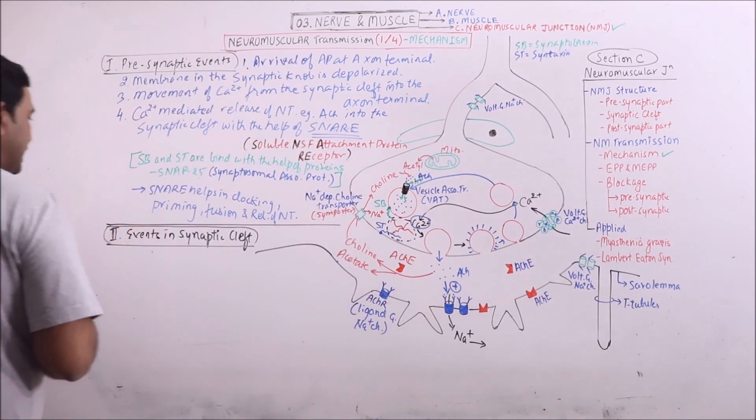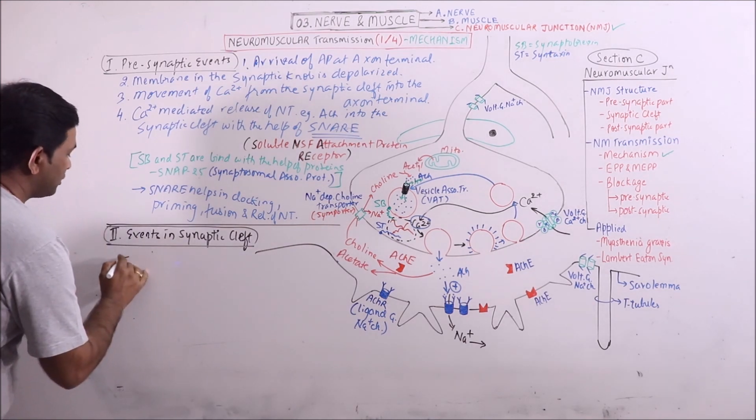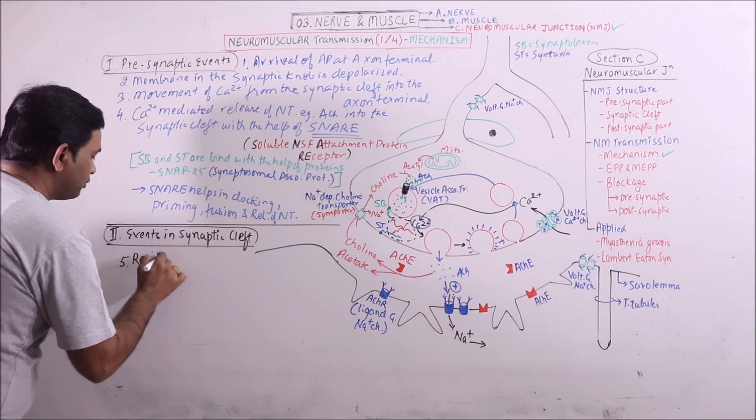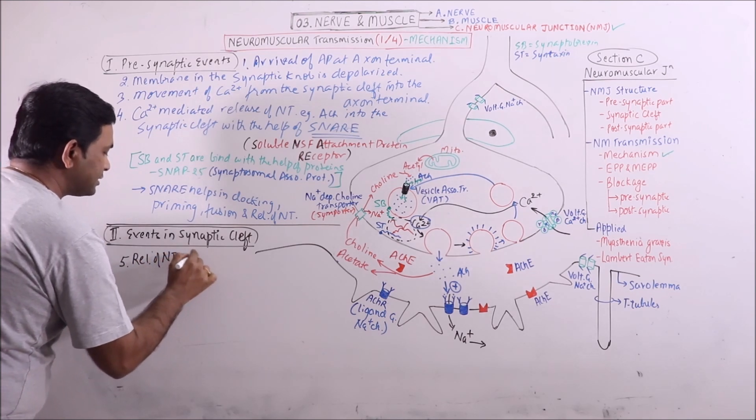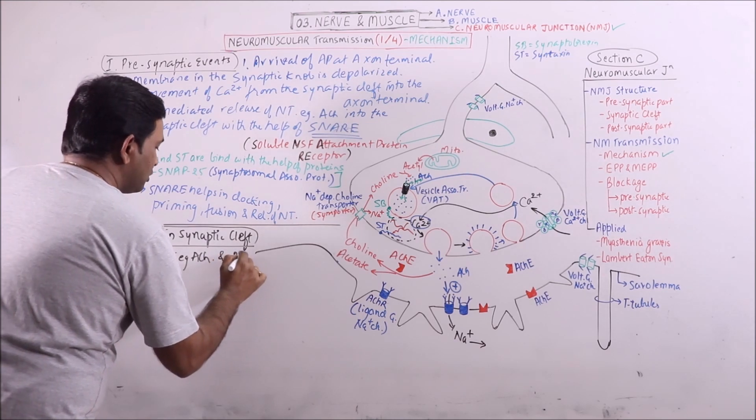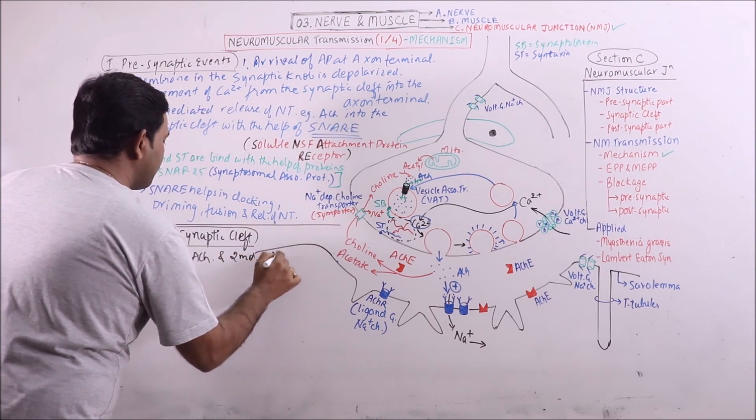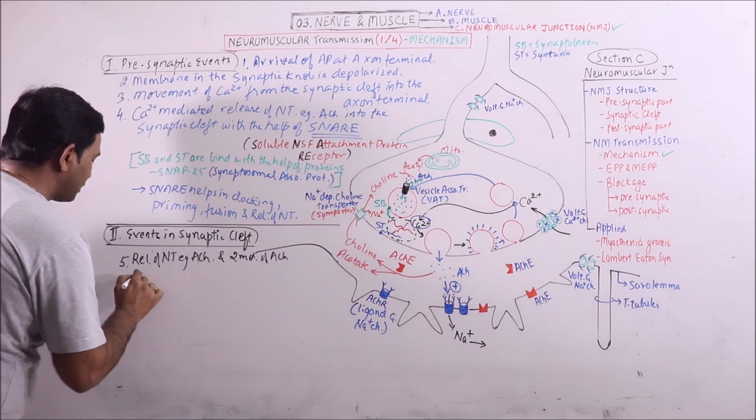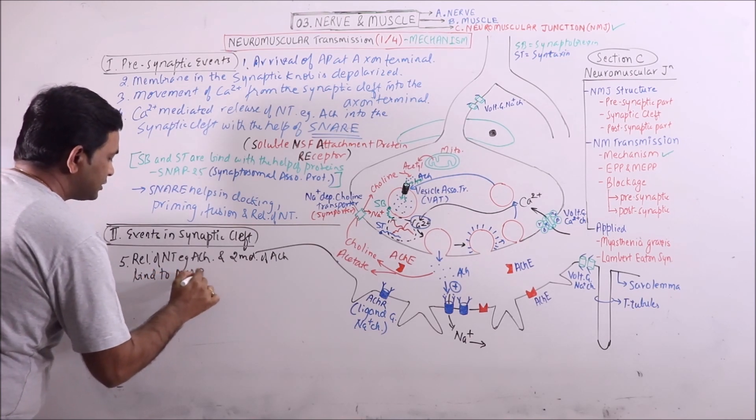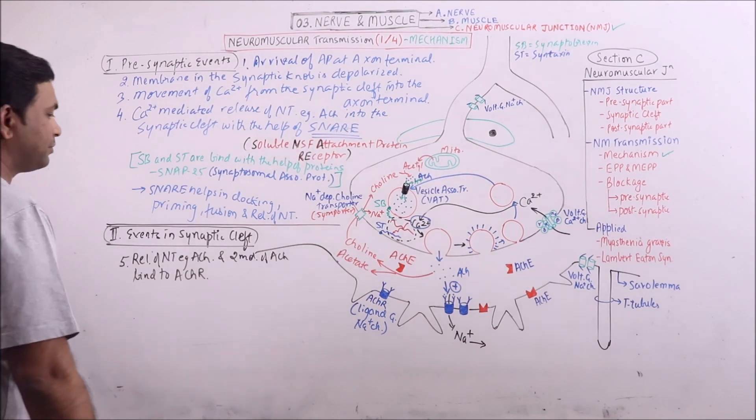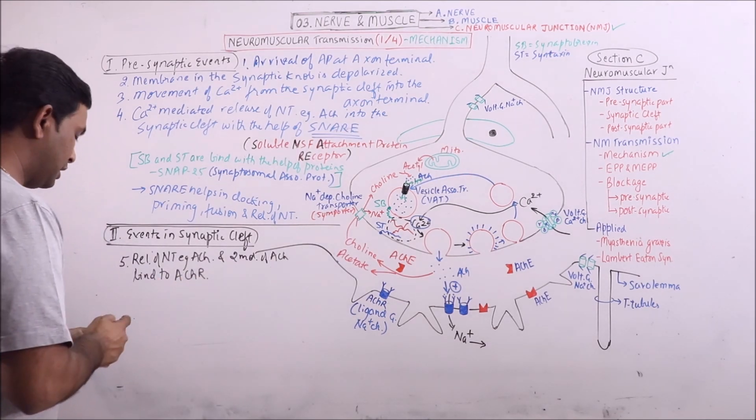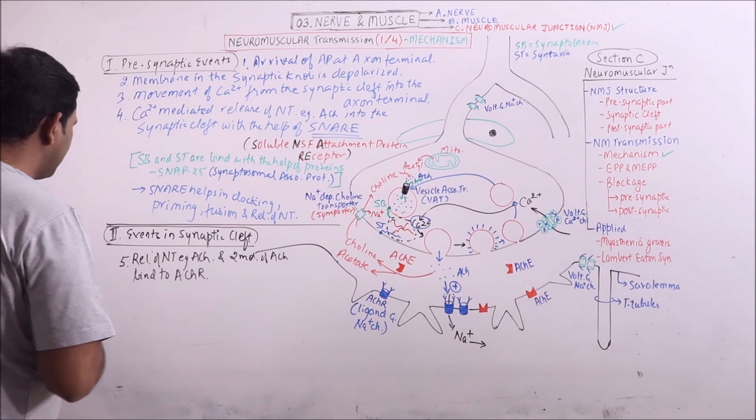What are the events occurring in synaptic cleft? Release of neurotransmitter like acetylcholine, and two molecules of acetylcholine bind to ACHR, the acetylcholine receptor. ACHR is a ligand gated sodium channel.